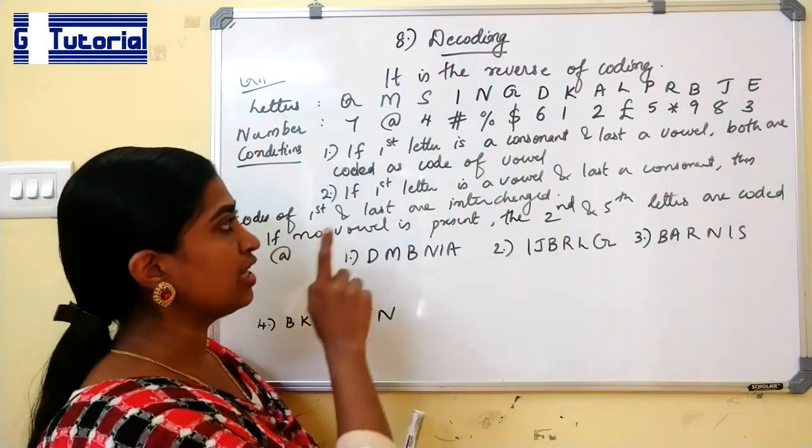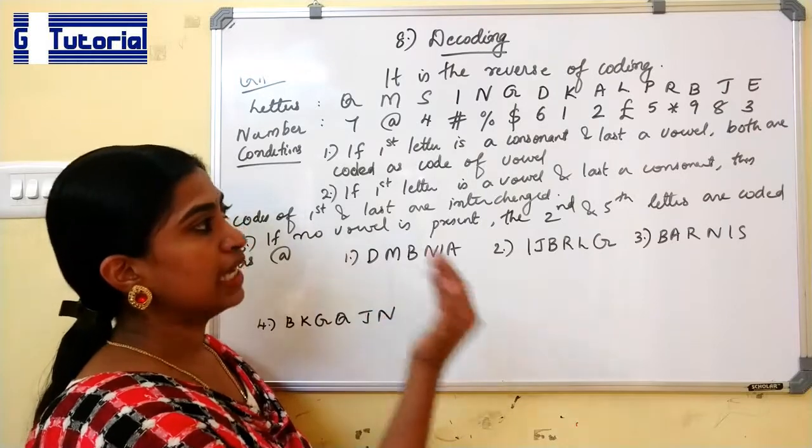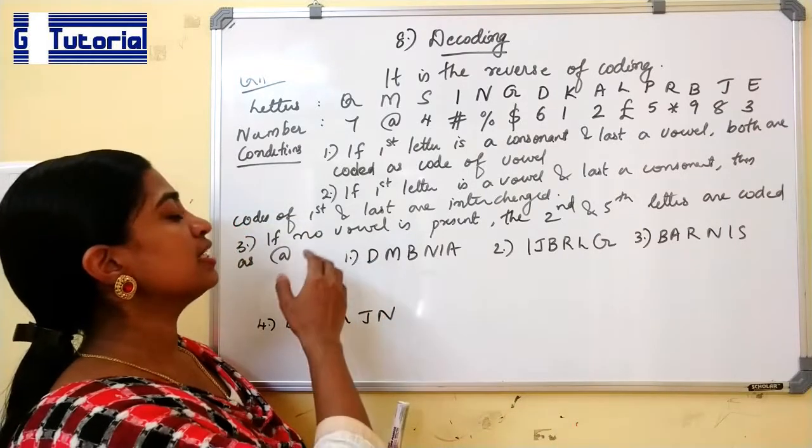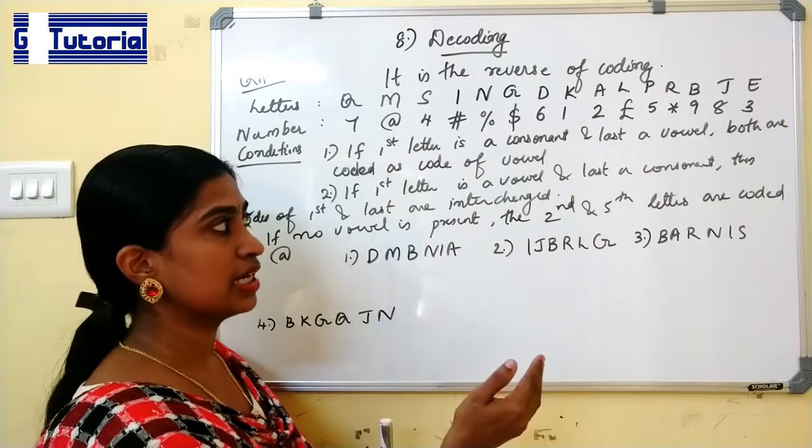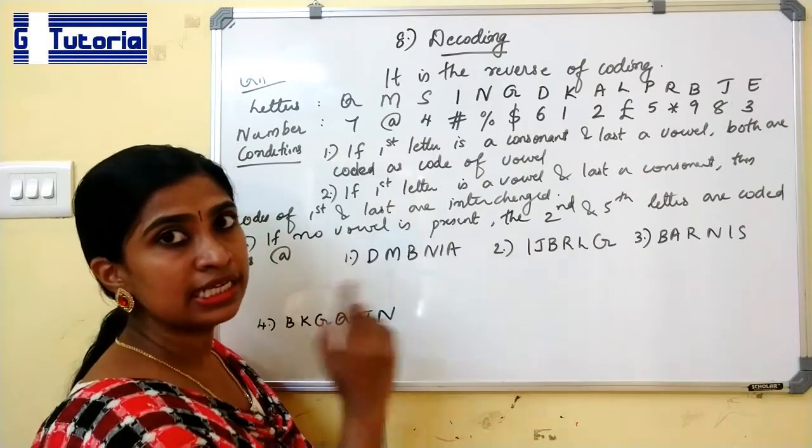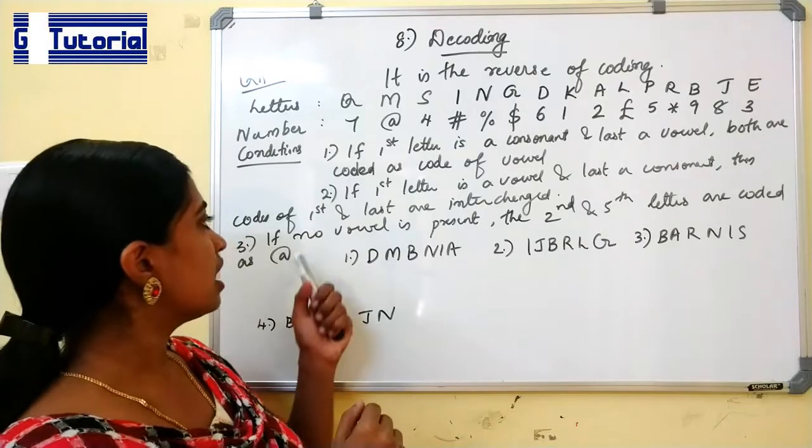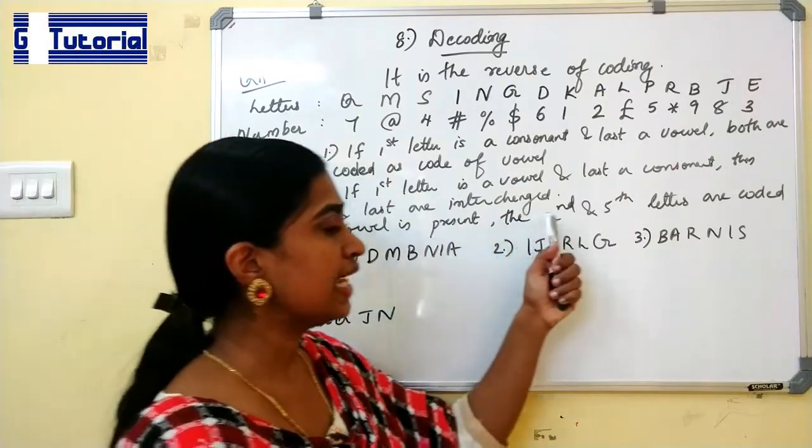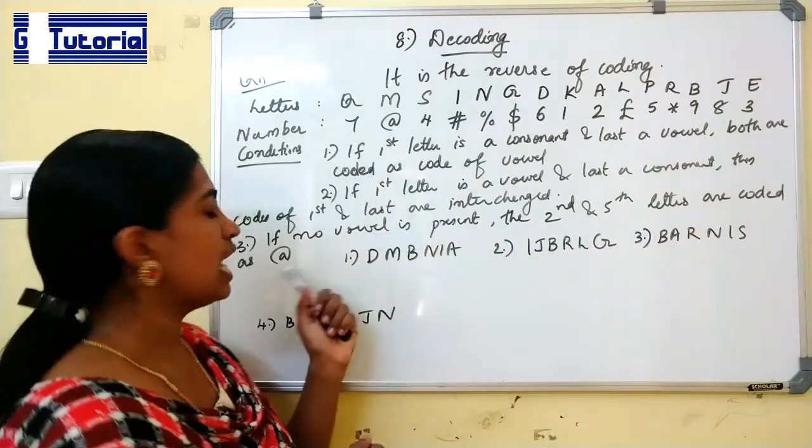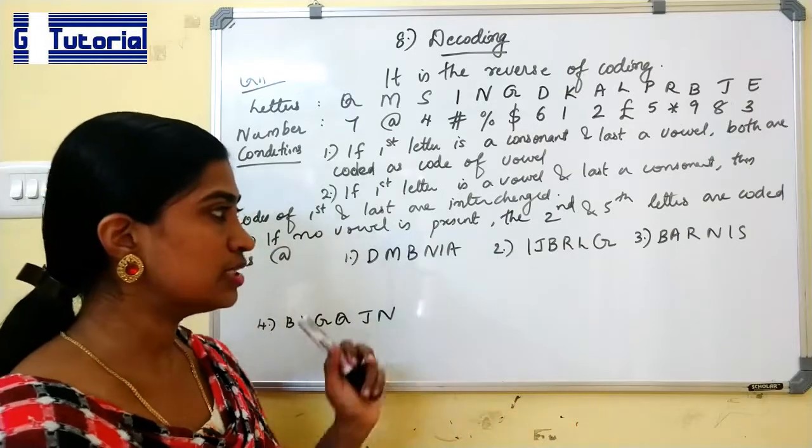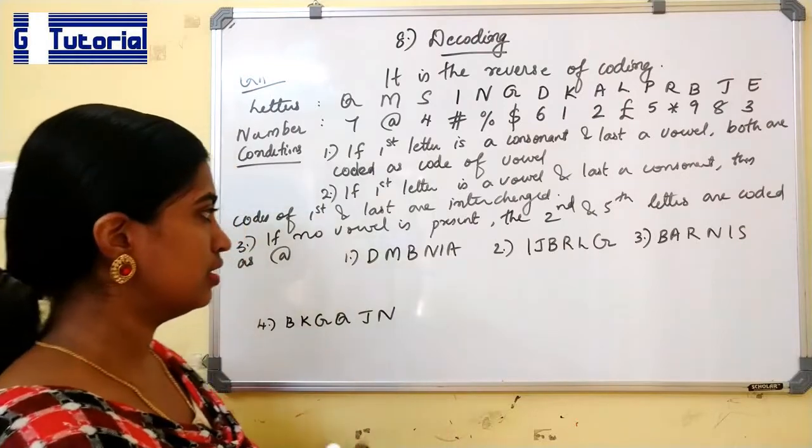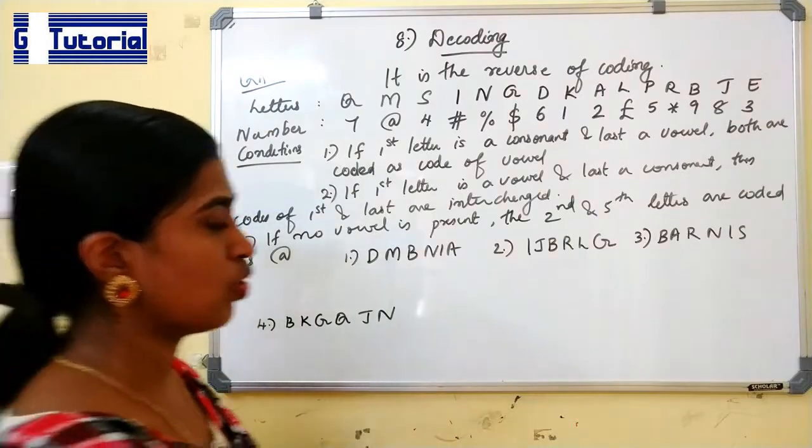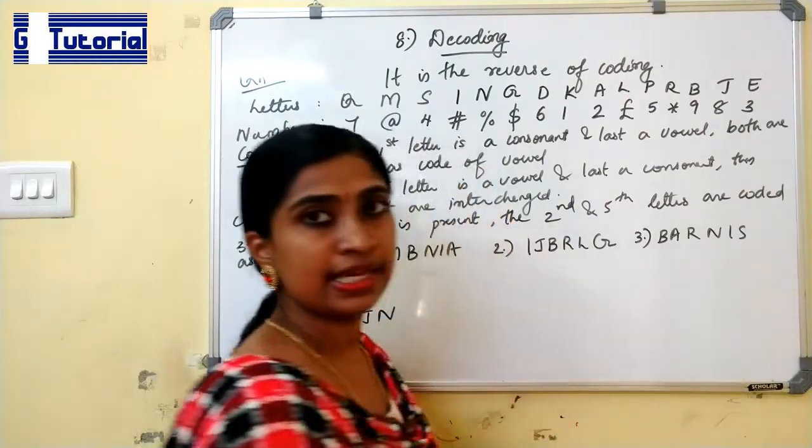The second condition is that if first letter is vowel and last is a consonant, then last and first are interchanged. So first is vowel and the last is consonant, its codes are interchanged. Then next is, if no vowel is present, the second and fifth letters are coded as... if there is no vowel in this word, second and fifth letters codes are interchanged. So let us review the problem. First letter is BARNIS.